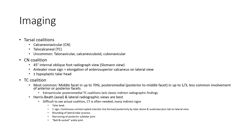Calcaneonavicular coalition is identified in 45% on internal oblique radiograph view. A key radiographic sign is the anteater sign — elongation of the anterior superior calcaneus seen on the lateral view, with possible associated hypoplastic talar head.